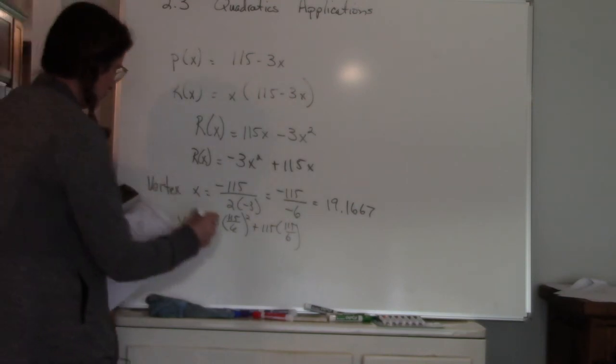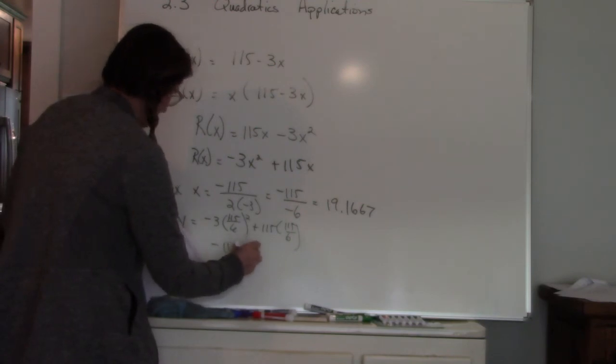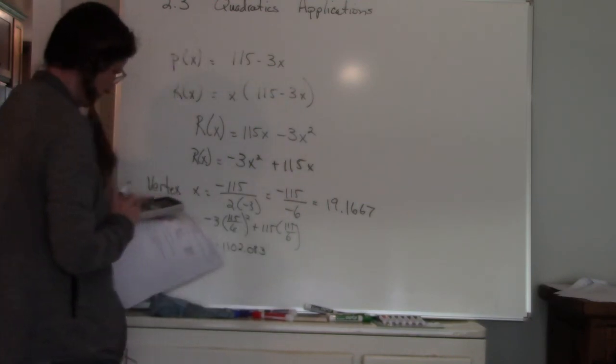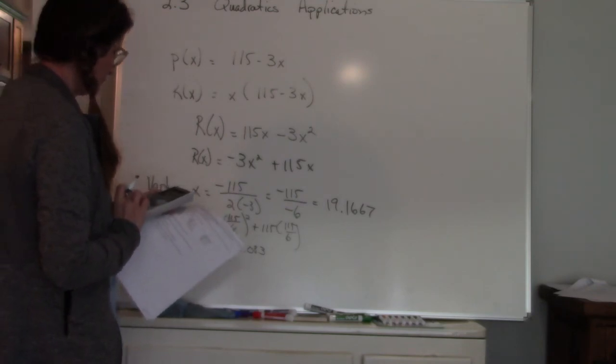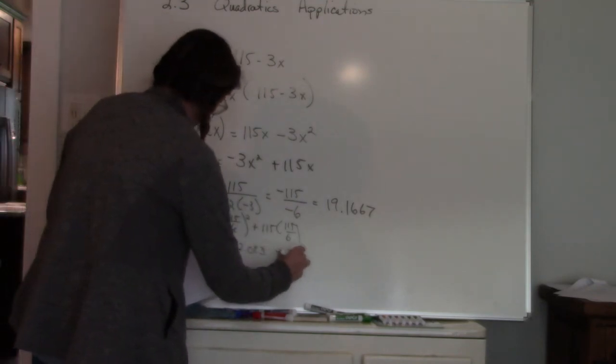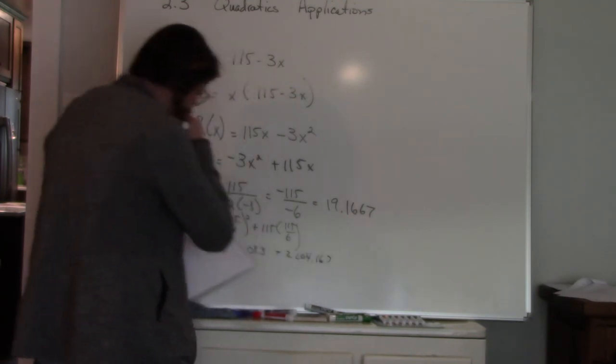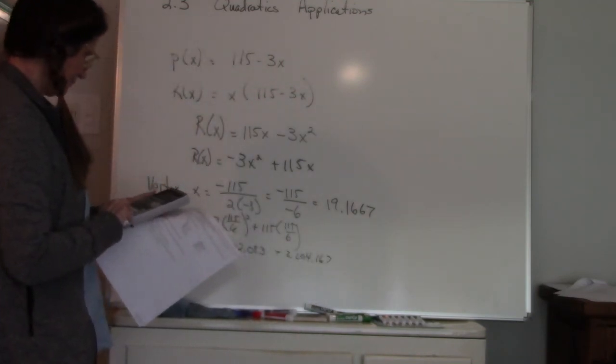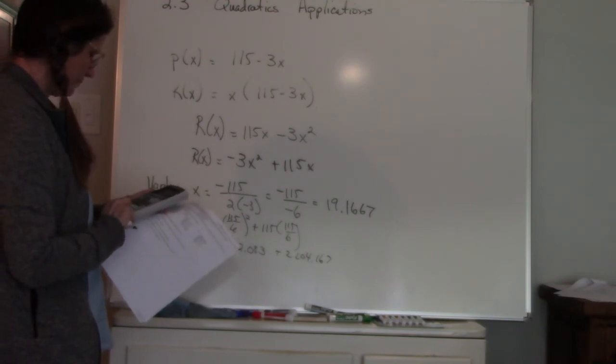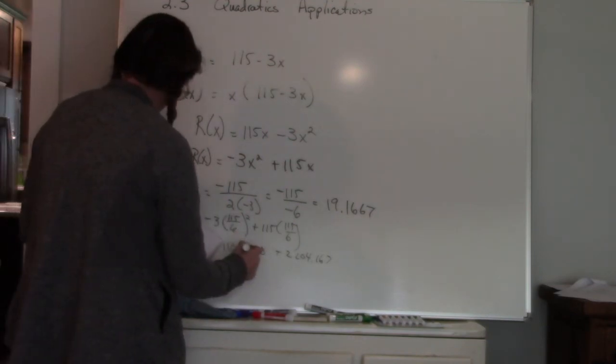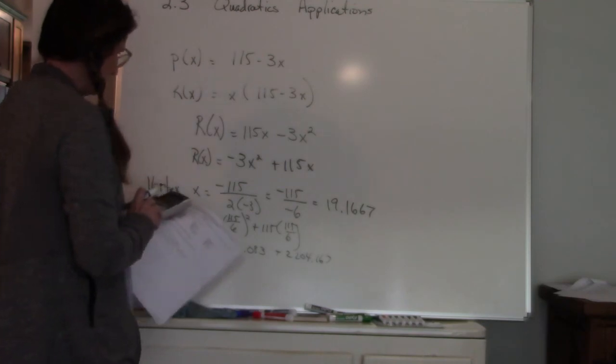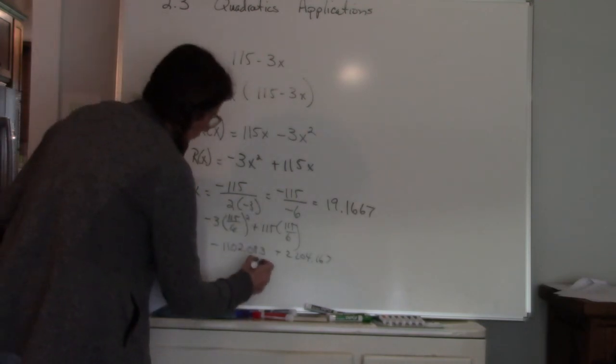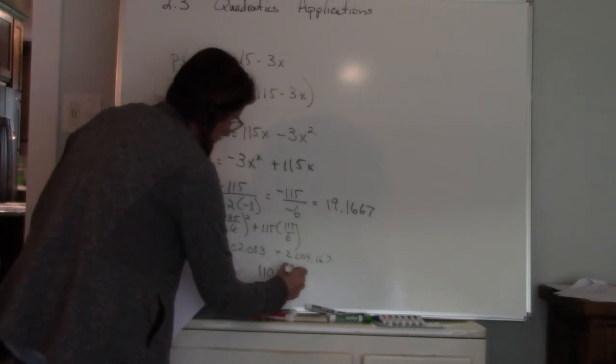So this ends up being negative 1102.083 plus 2204.167. And then the next question says what is the maximum revenue so the maximum revenue is 1102.08.